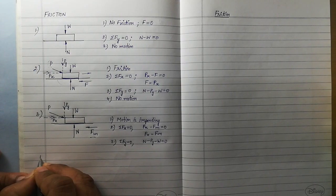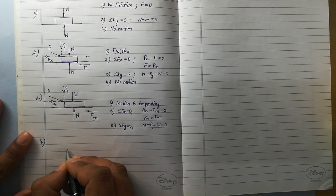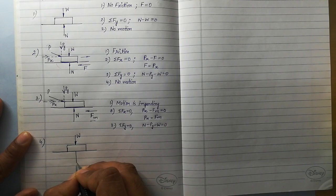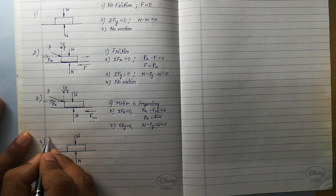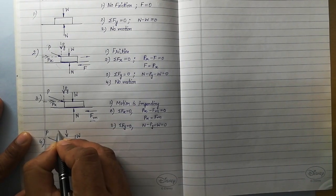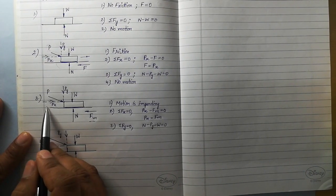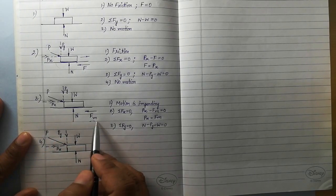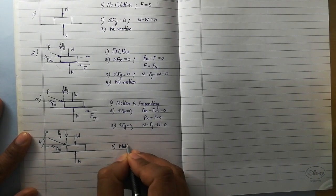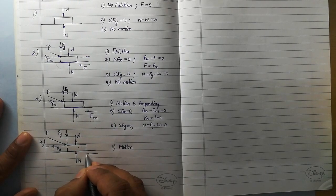Now let us consider the last case — the fourth case. We will further increase the magnitude of this particular external force. Same body resting on the surface, weight acting downward, receiving a normal pressure. P is further increased, so its two components are Py (normal to the surface) and Px (along the surface). When you increase Px further, it will overcome the frictional force and motion of the body will start. Once there is relative motion between the body and the surface in contact, this frictional force will change to kinetic friction.